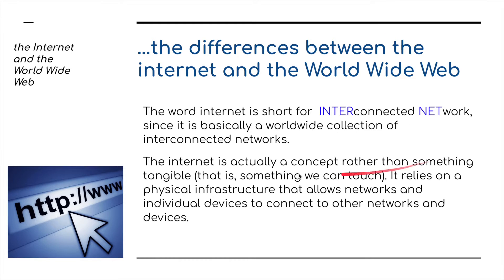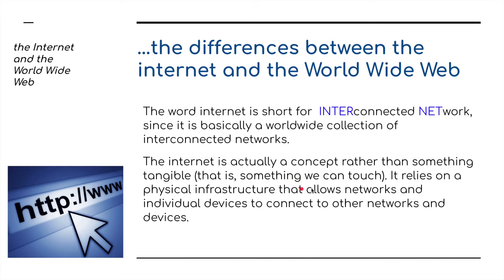The difference between the internet and the World Wide Web. People think these are the same thing, but they're not. The word 'internet' is short for interconnected network. It is basically a worldwide collection of interconnected networks. The internet is actually a concept rather than something tangible — you can't touch it. There's no hardware. It relies on a physical infrastructure that allows networks and individual devices to connect to other networks and devices.